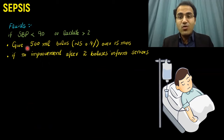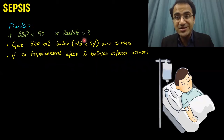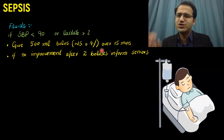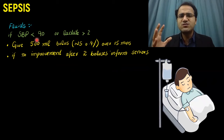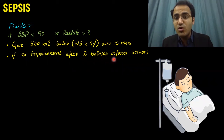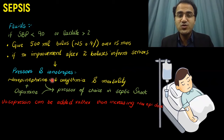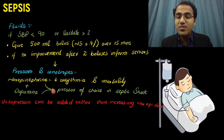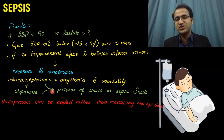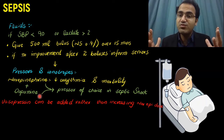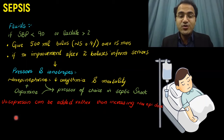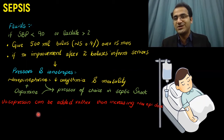Regarding fluids: if systolic blood pressure is less than 90 mmHg or lactate is greater than 2 mmol/L, give a 500 ml bolus of 0.9% normal saline over 15 minutes. If there is no improvement after two boluses, inform senior colleagues and consider vasopressors and inotropes. Vasopressors include norepinephrine and dopamine — norepinephrine decreases arrhythmias and mortality. The combination of dopamine and norepinephrine is the vasopressor of choice in septic shock. Rather than escalating norepinephrine doses, vasopressin can be added.